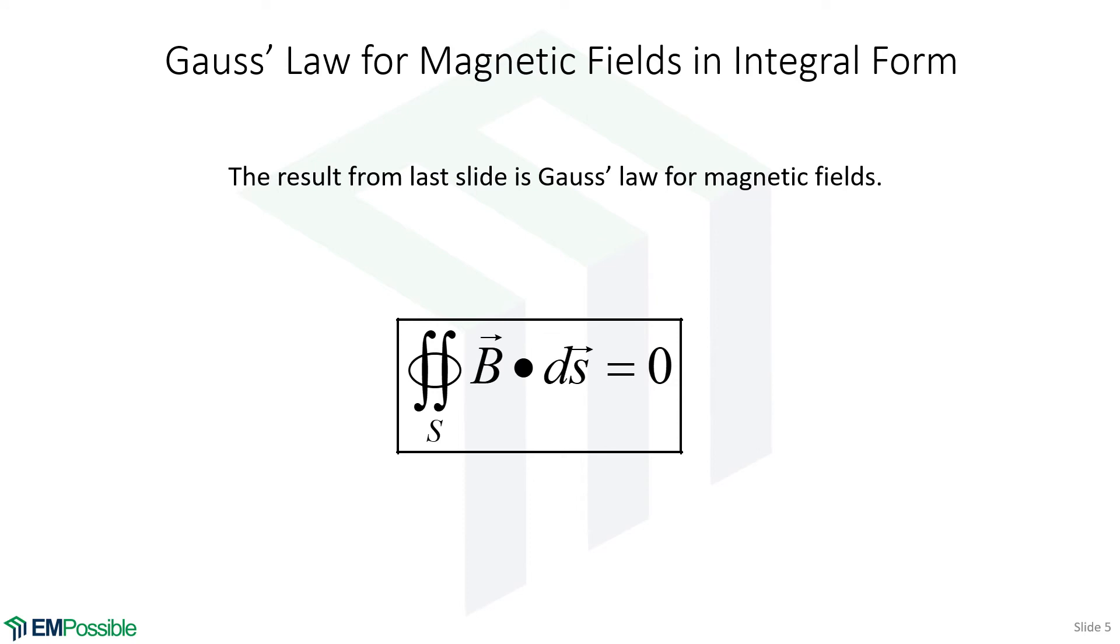So here we are at Gauss's law for magnetic fields in integral form. Notice there is no volume integral of magnetic charge density. That's because there is no magnetic charge density. So this is Gauss's law for magnetic fields in its entirety, in integral form.